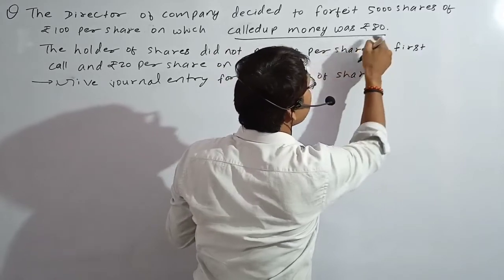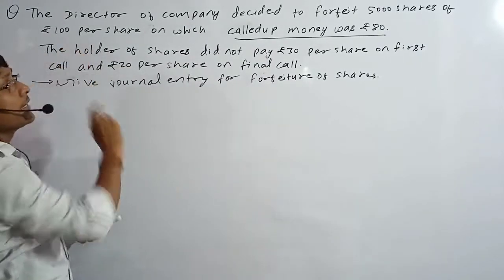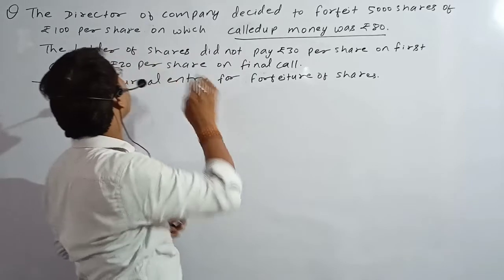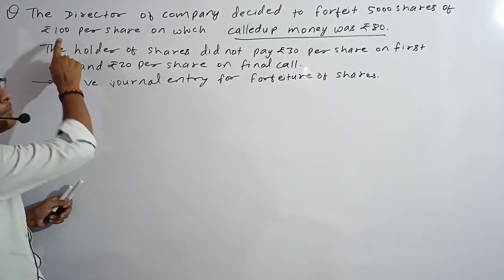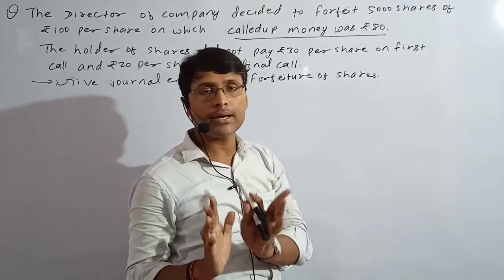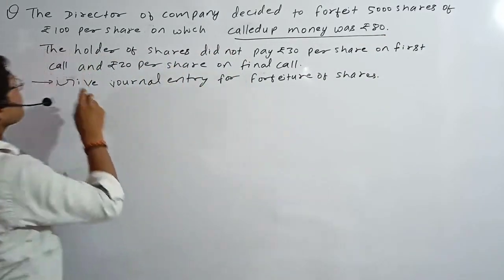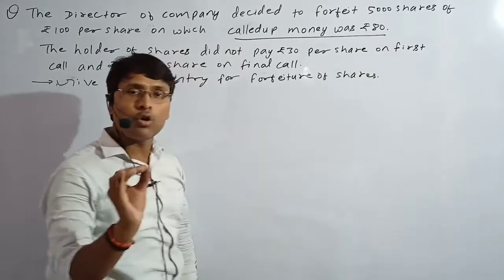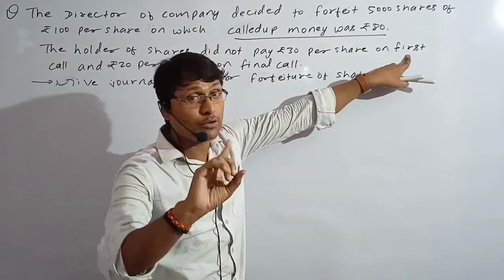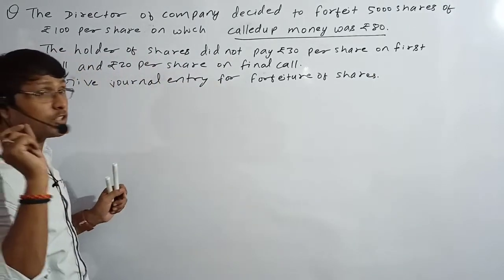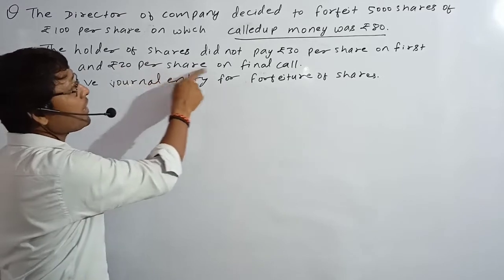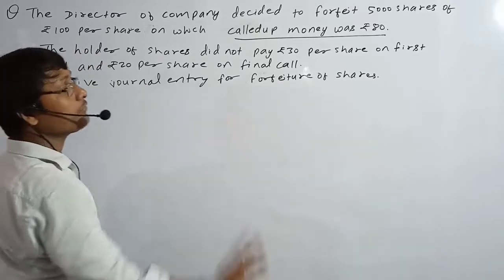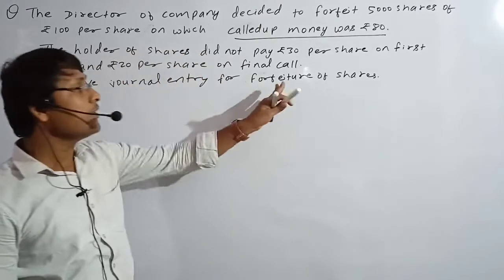How much is the call-up money? ₹80. The face value is ₹100, but the company asked only ₹80. The holder of shares did not pay ₹30 per share on the first call and ₹20 per share on the final call. So ₹20 rupees was not given on the final call. Give a journal entry for forfeiture of shares.